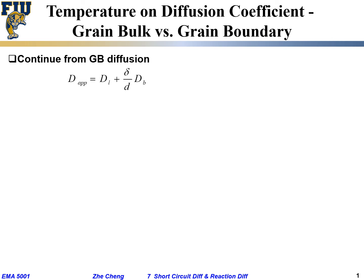The apparent diffusion coefficient across a polycrystalline material equals the lattice term within the uniform lattice term plus a grain boundary contribution. The grain boundary contribution is the grain boundary coefficient times the proportion of the grain boundary. Rearranging, we put D_L to the left: D_apparent/D_L = 1 plus (delta/d) times (D_B/D_L).